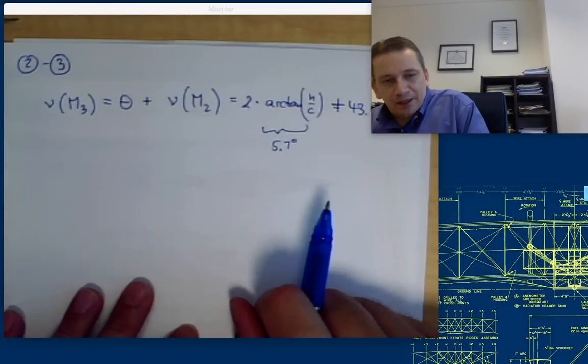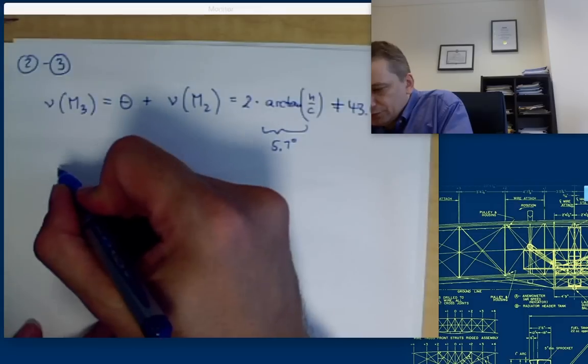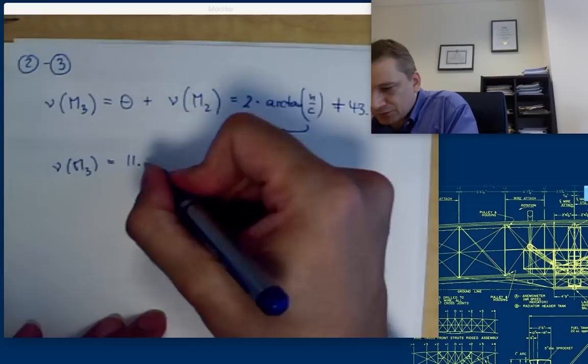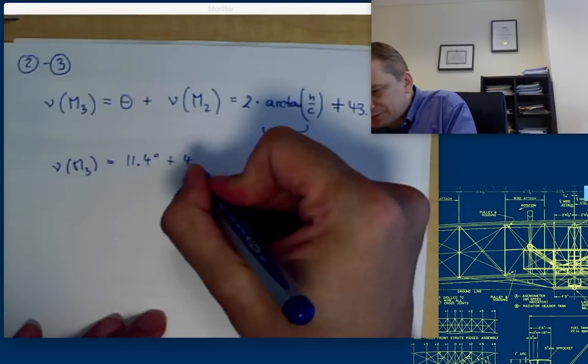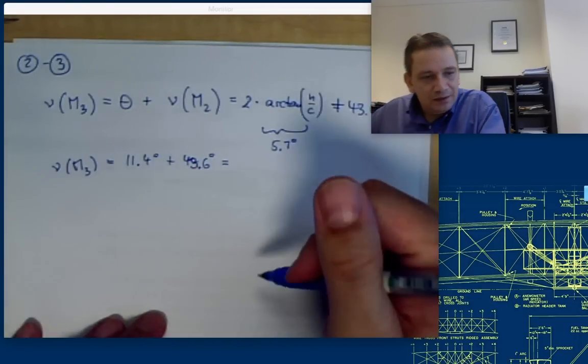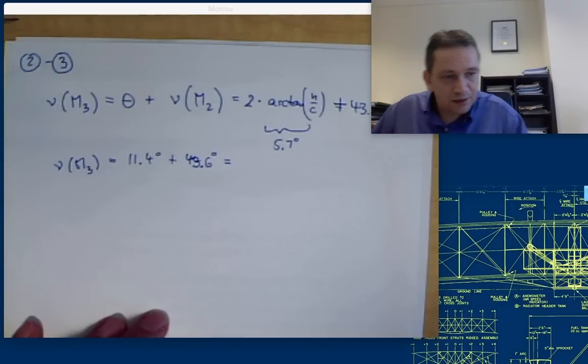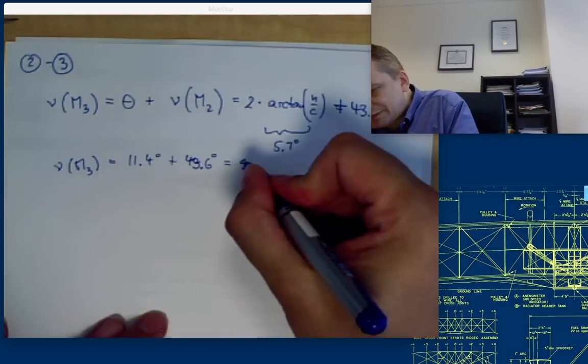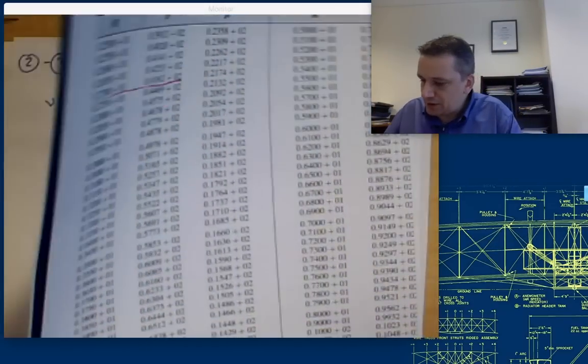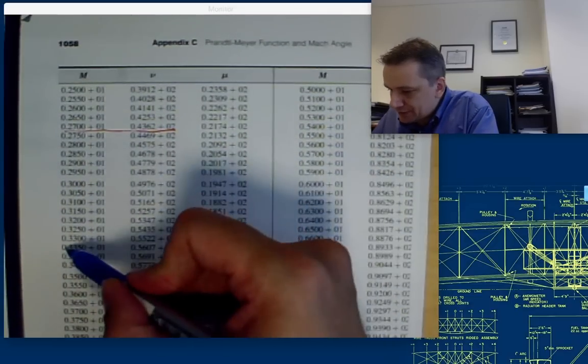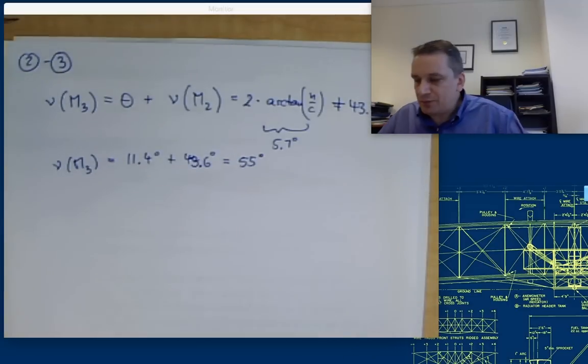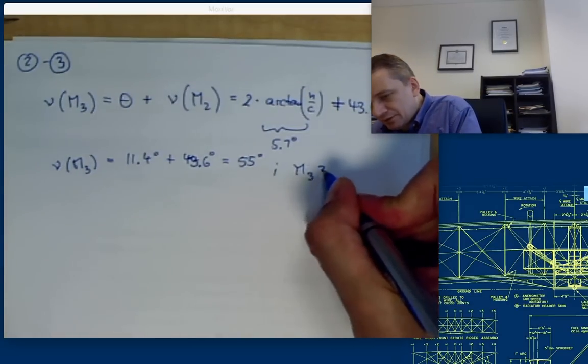Okay. So, the nu of M3 is going to be 11.4 degrees plus 43.6. That is going to be then 55 degrees. Exactly. Okay. I need to determine now the Mach number. 55 degrees. The next one, next closest one is over here. That is Mach 3.3. So, M3 is going to be 3.3.